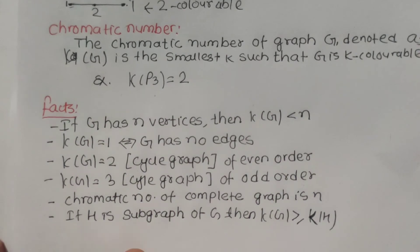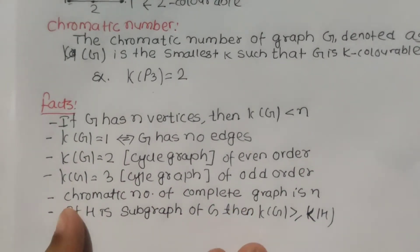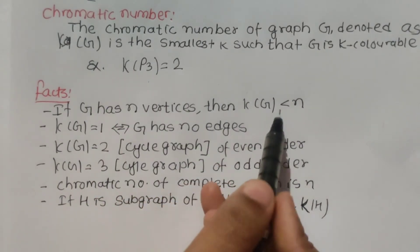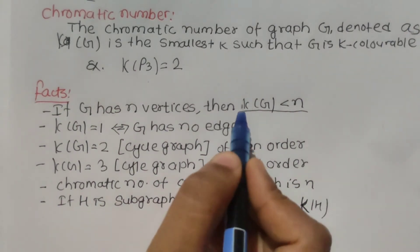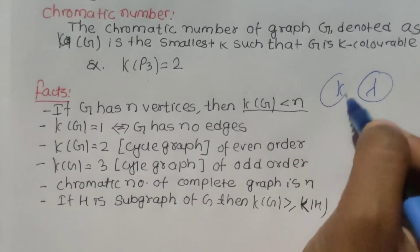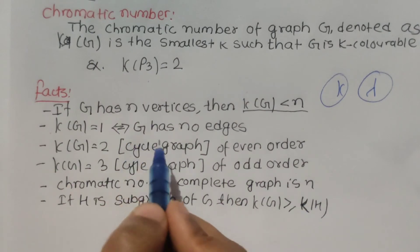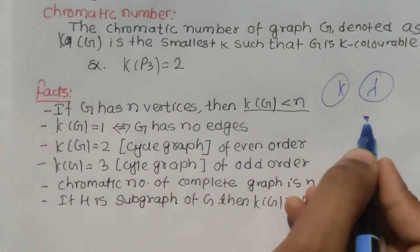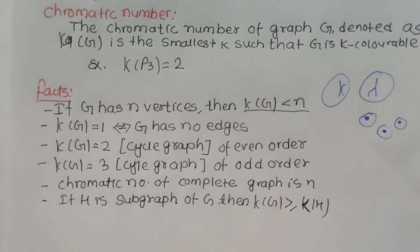We have some notes to remember — these are common ideas useful for multiple choice questions. If G has n vertices, then the chromatic number of the graph is at most n. And if G has no edges, we can color all vertices with a single color, so the chromatic number of G is equal to 1.